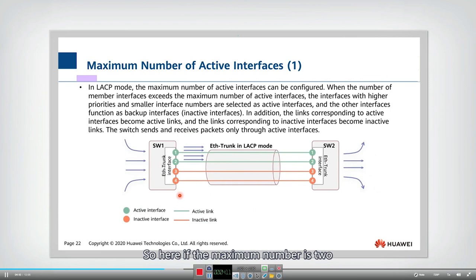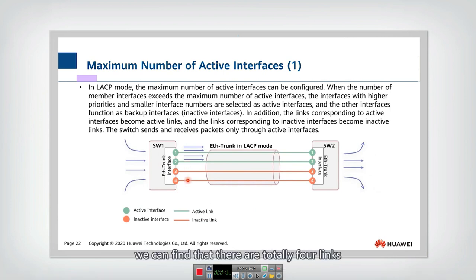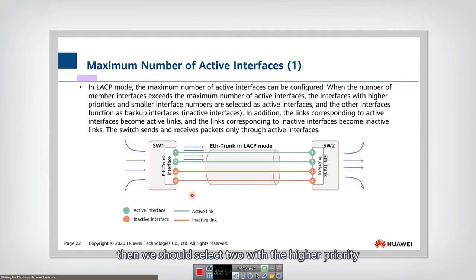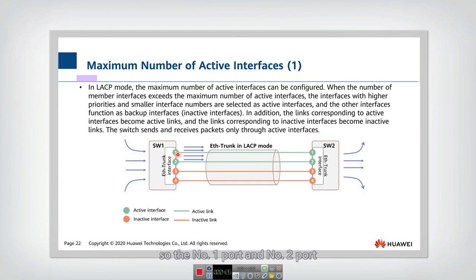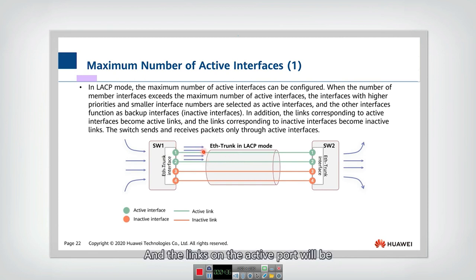The interface with the smaller number has higher priority to be selected as the active port. For example, if the maximum number is two and there are totally four links, then we should select two with the higher priority as the active link. Since all interfaces have the same priority, we compare the numbers — port one and port two will be selected as the active ports, and the links on the active ports will be selected as the active links.